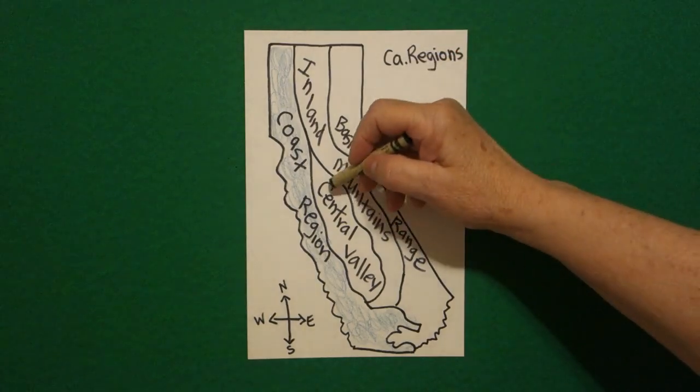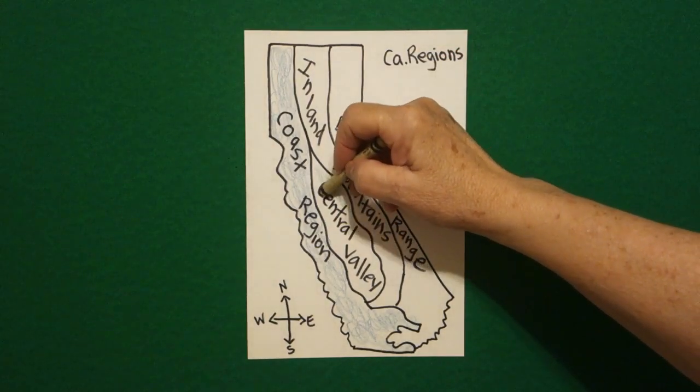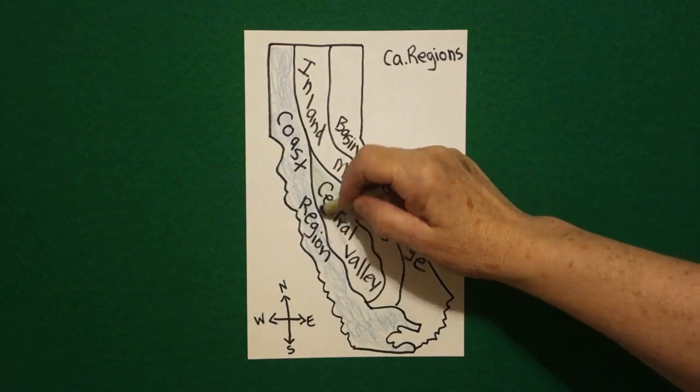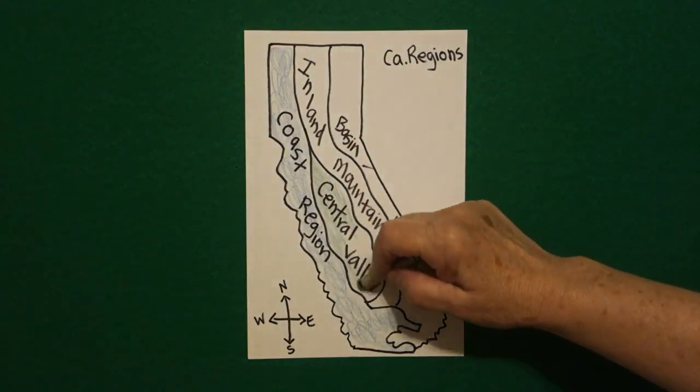Next, central valley. This is where we get all of our fruits and vegetables. So I'm going to make this a light green. All the way down.